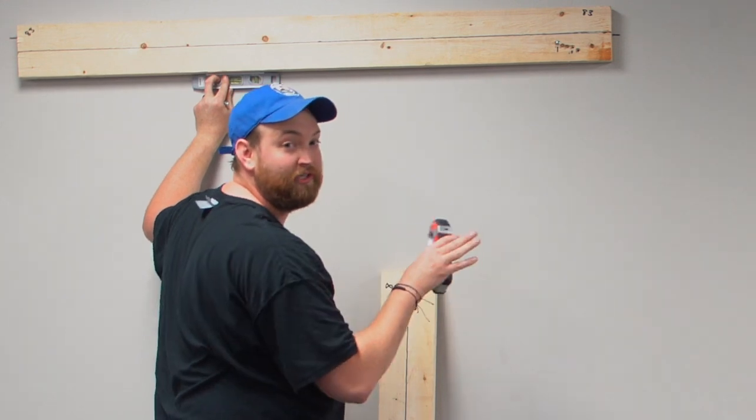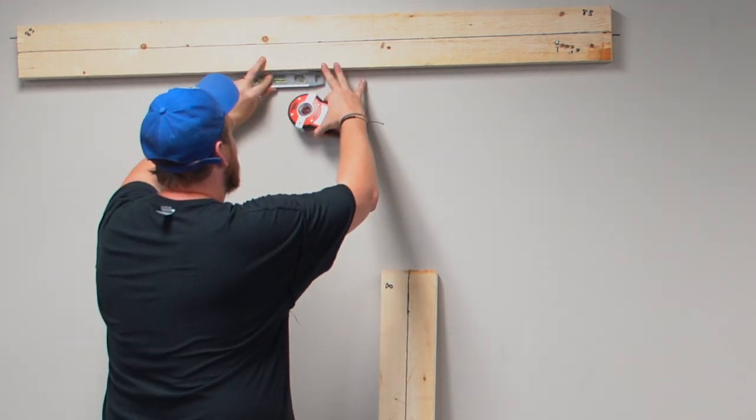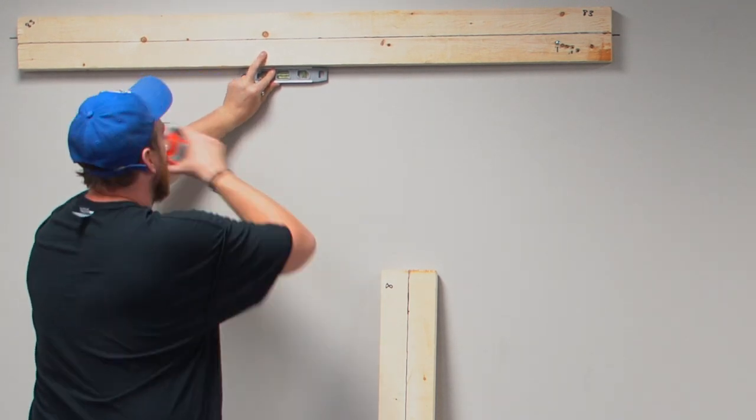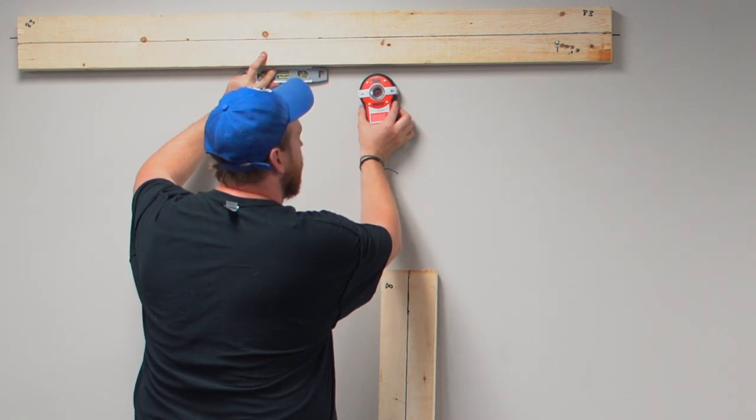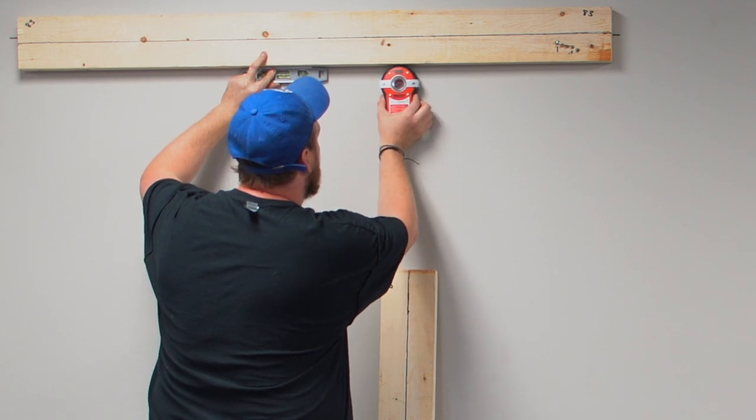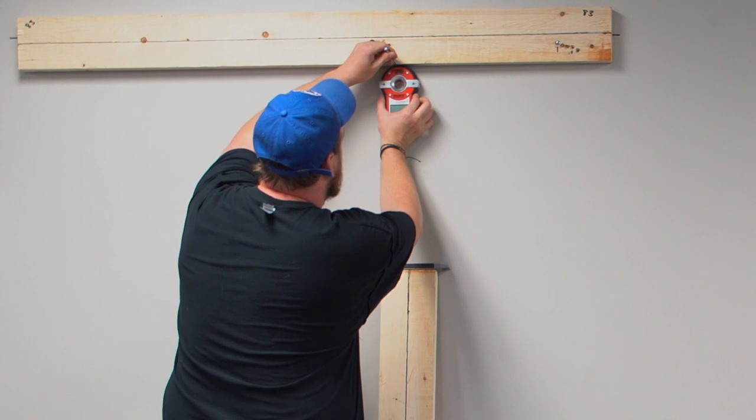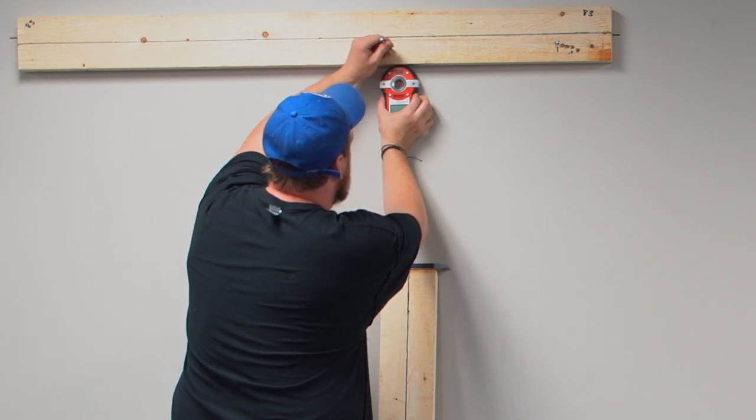I got my first bolt in super easy. It was just easy peasy. Now I'm going to take my level and I'm going to get this thing level. It should line up with that line over there. I'm going to find me another stud. I'll just use my level to hold it, and then I'll mark here. Now I know where it's at.